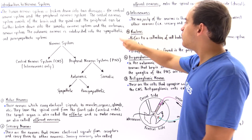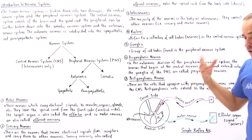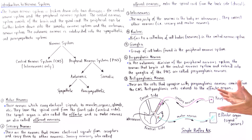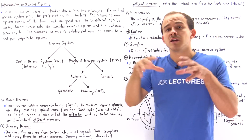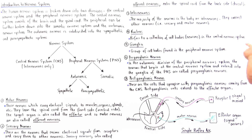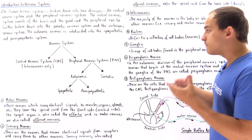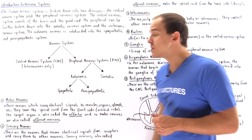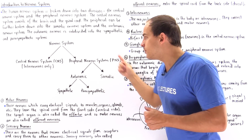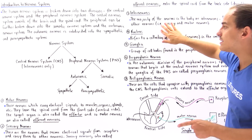The nucleus, with respect to the nervous system, doesn't refer to the individual nucleus inside the cell body of a neuron. Instead, it refers to a collection of many neurons — many cell bodies — found within the central nervous system. On the other hand, a collection or group of cell bodies found inside the peripheral nervous system is known as ganglia.